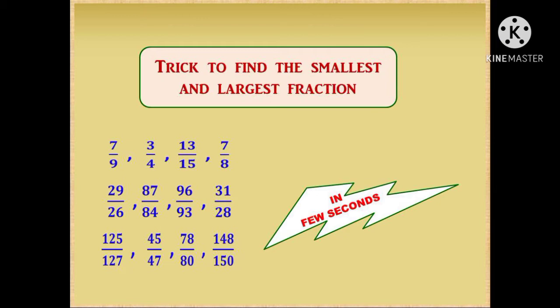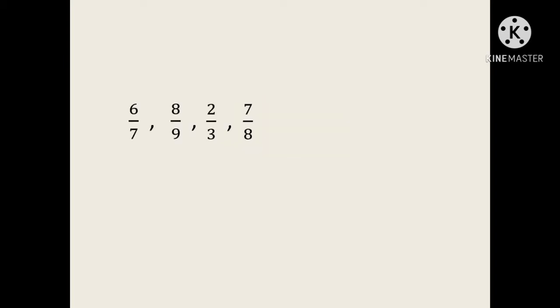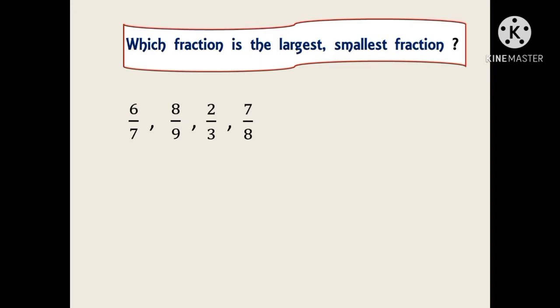Once you get practice with these types of tricks, you can solve the problem even in your mind. So let us see the trick now. For easy understanding, I have divided this into three types. Let us see Type 1. Here is a question: 6 by 7, 8 by 9, 2 by 3 and 7 by 8. In the normal method, to find the largest or smallest fraction, we are supposed to find the LCM for the denominators. That is quite difficult and will take a lot of time, so instead we are going to follow a new method.